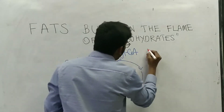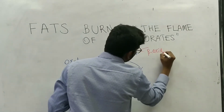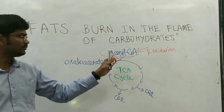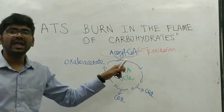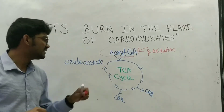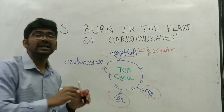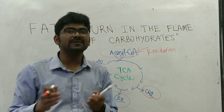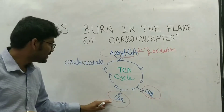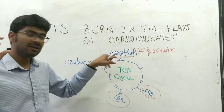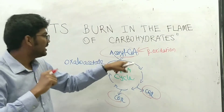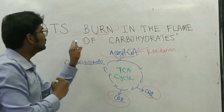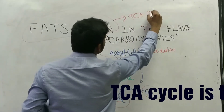Fats on beta oxidation will produce acetyl-CoA as the end product. This acetyl-CoA undergoes the TCA cycle and it gets completely oxidized to carbon dioxide, two molecules of NADH and FADH. So that is complete oxidation of acetyl-CoA in the TCA cycle. This is burning of fats — burning of fats is the TCA cycle.